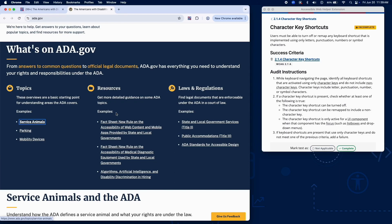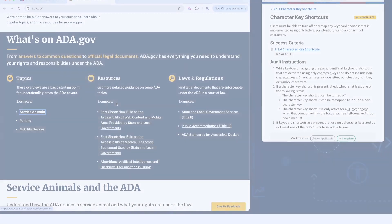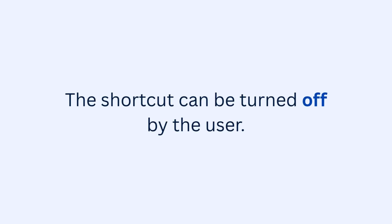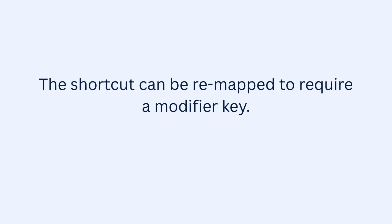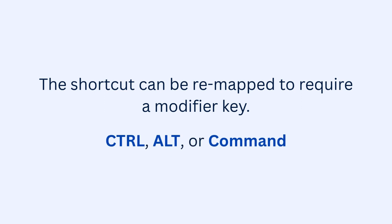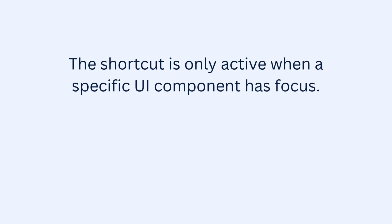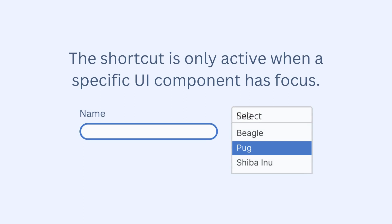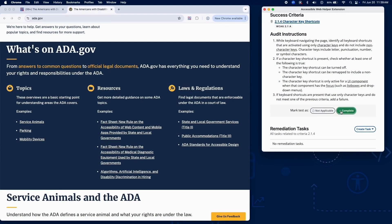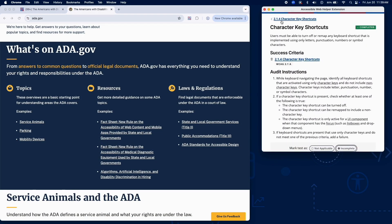For each shortcut found, confirm that at least one of the following is true: the shortcut can be turned off by the user; the shortcut can be remapped to require a modifier key like Control, Alt, or Command; or the shortcut is only active when a specific UI component has focus, such as a text field or dropdown. If none of these conditions are met for a character key shortcut, add a failure.